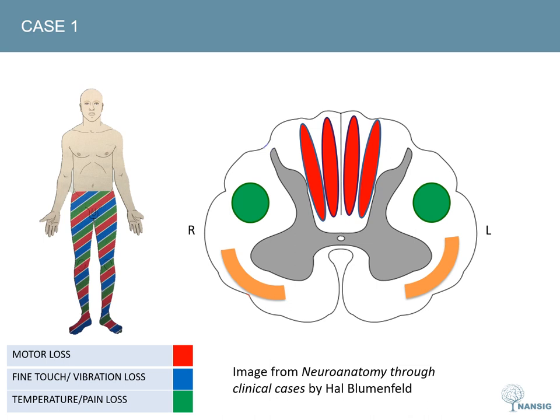The question stem tells us there's been a loss of all sensory modalities — fine touch, proprioception, and vibration — so we can deduce that both dorsal columns have been lost. Note that at T10 the cuneate fasciculus would not yet have formed, so the diagram is slightly simplified. The loss of pain and temperature sensation means the spinothalamic tracts have likely been hit bilaterally, and the bilateral upper motor neuron signs indicate the descending lateral corticospinal tracts have been damaged.